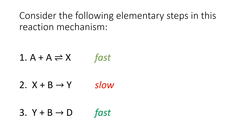Let's look at the following elementary steps in this mechanism. Notice that our slow step is in the middle. Notice that reaction one could be written as 2A, and we have an equilibrium sign — 2A is in equilibrium with X.